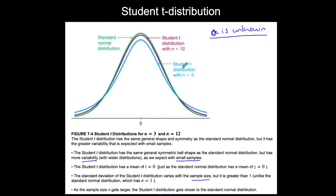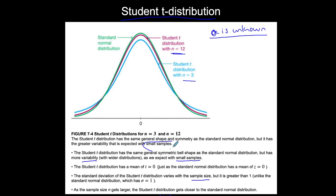Here I have a Student t-distribution with a very small sample size of 3 in blue — a little lower and wider. In red is sample size 12 — a little higher and less wide. The standard normal is in green. As sample size gets larger, the t-distribution approaches the standard normal. We use the Student t-distribution when sigma is unknown and when sample sizes are small.